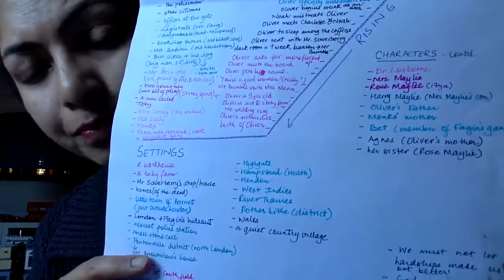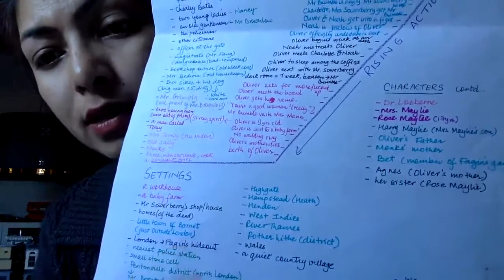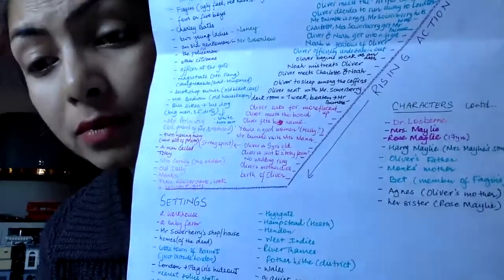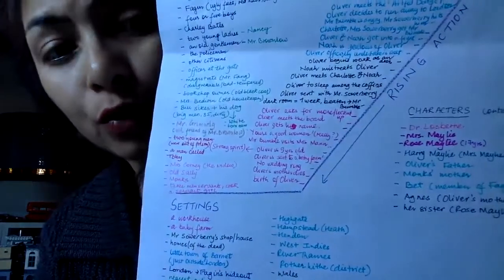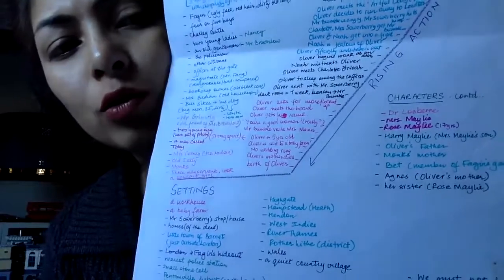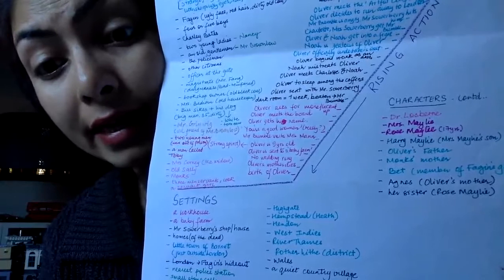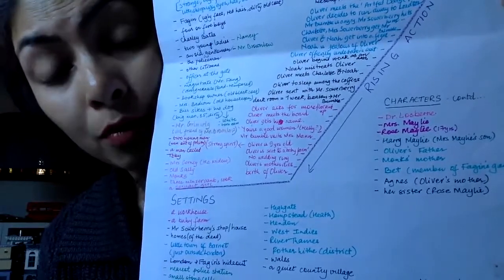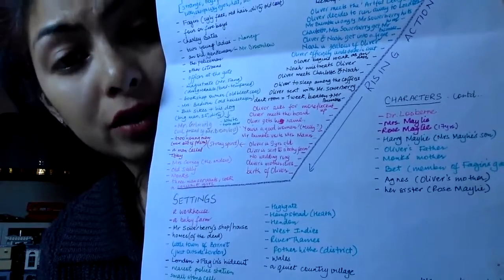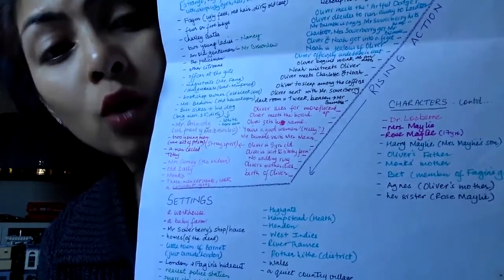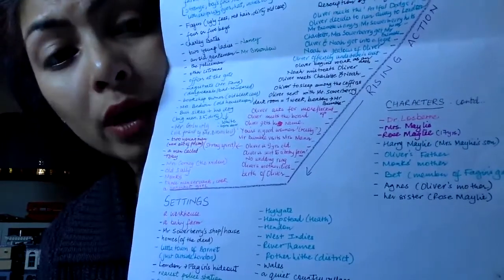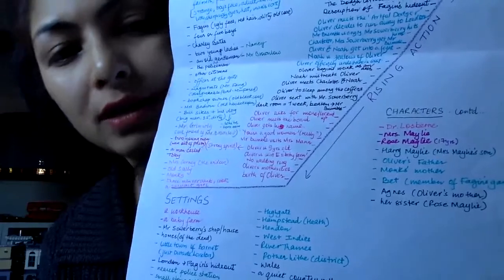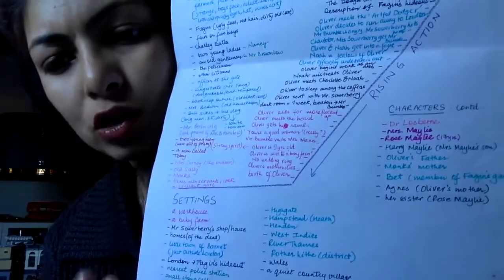Let's have a look at the settings and the characters. You have Agnes, Oliver's mother, and her sister turns out to be Rosemary — the sister of Agnes and Oliver's nephew. In the settings, you see Highgate — all the places where Bill Sykes runs to after killing Nancy. Then Hampstead Heath, Hendon, and the West Indies, where Mr. Brownlow goes looking for Monks. The River Thames and Rotherhithe District is where the other gang members of Fagin were hiding when Fagin was taken by the police, and this is also where Sykes dies accidentally. Then Wales is mentioned, and a quiet country village is mentioned — this is where the story basically ends.